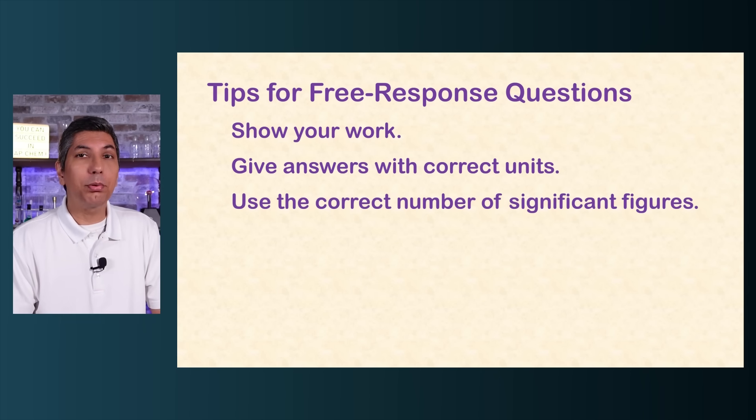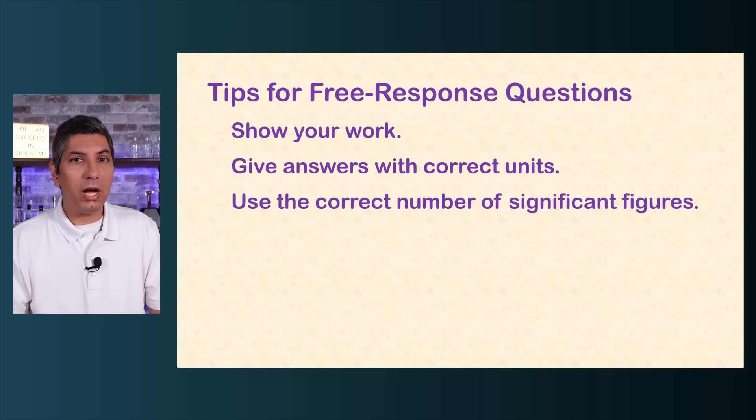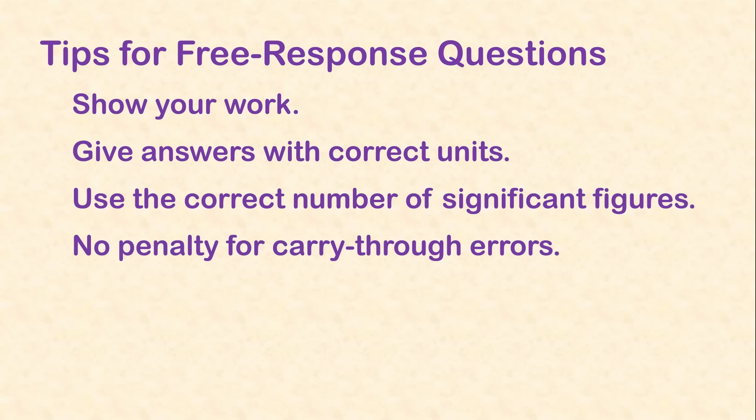Give your answer with an appropriate number of significant figures — for most problems, this will be either two or three. When calculating, avoid rounding off too much before your final answer; round only at the end of a problem. On the AP exam, you are not penalized for carry-through errors. That means if you calculate part A incorrectly and use that answer for parts B and C, you still get full credit for those later answers as long as everything else is right. So if you aren't sure about an early part of the question, don't give up — you can still do great.